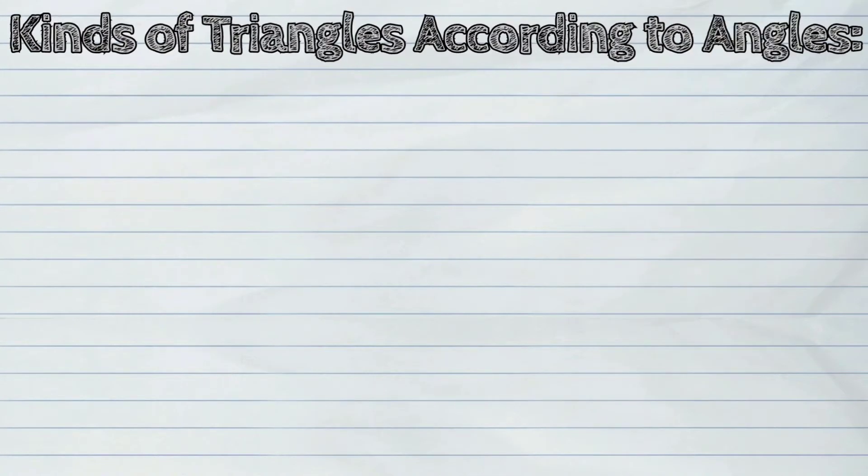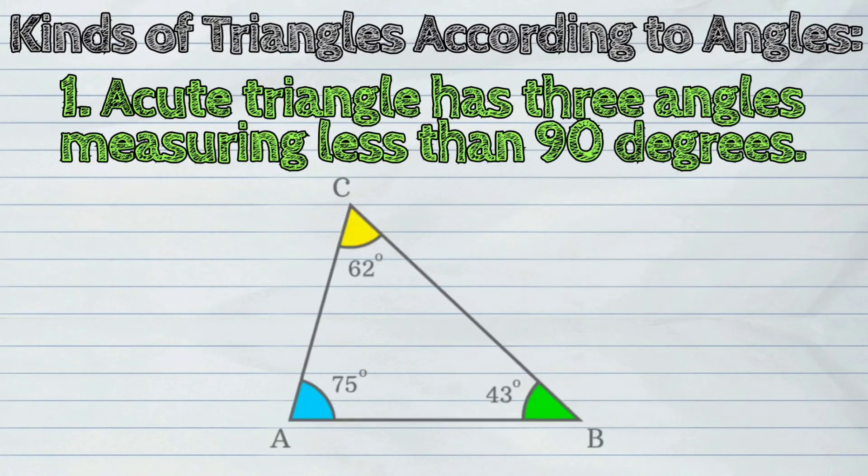Triangles can also be classified according to angles. An acute triangle has three angles measuring less than 90 degrees.